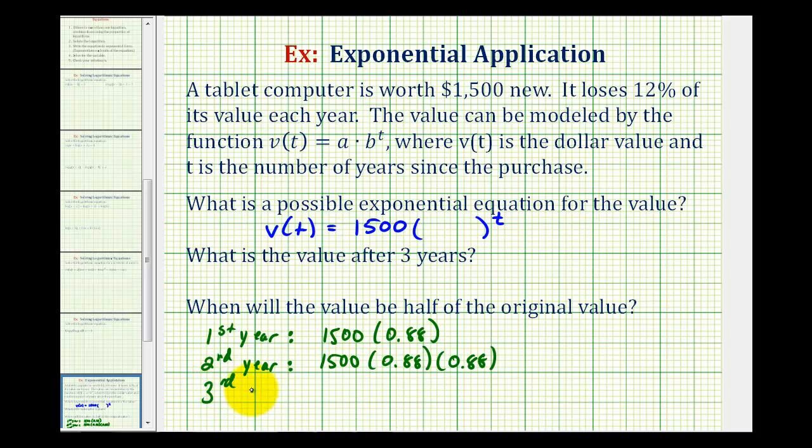And this pattern is going to continue. After the third year, we'll have 1,500 times 0.88 times 0.88 times another 0.88. So the base of our exponential function is going to be 0.88, which is the percent of value the computer retains after each year.